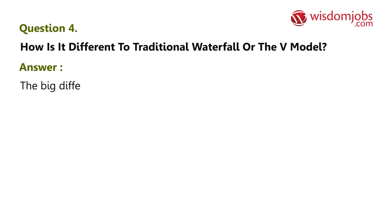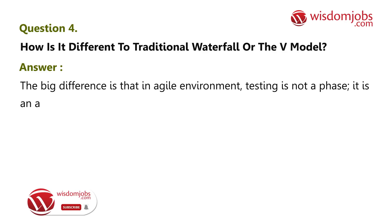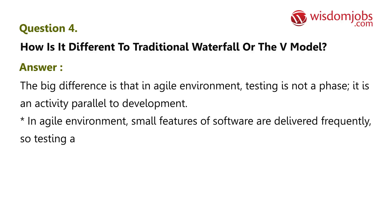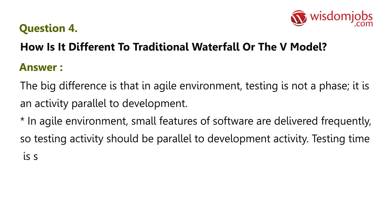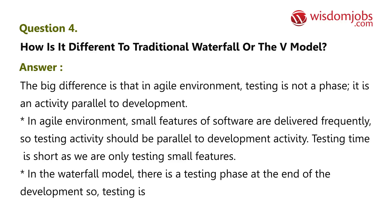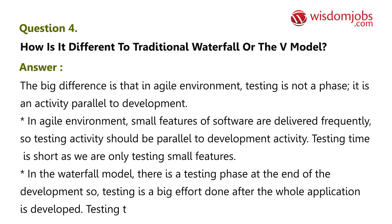Question 4: How is it different to traditional waterfall or the V model? Answer: The big difference is that in an agile environment, testing is not a phase — it is an activity parallel to development. Small features of software are delivered frequently, so testing activity should be parallel to development activity, and testing time is short as we are only testing small features. In the waterfall model, there is a testing phase at the end of development, so testing is a big effort done after the whole application is developed, and testing time is long as we have to test the whole application.